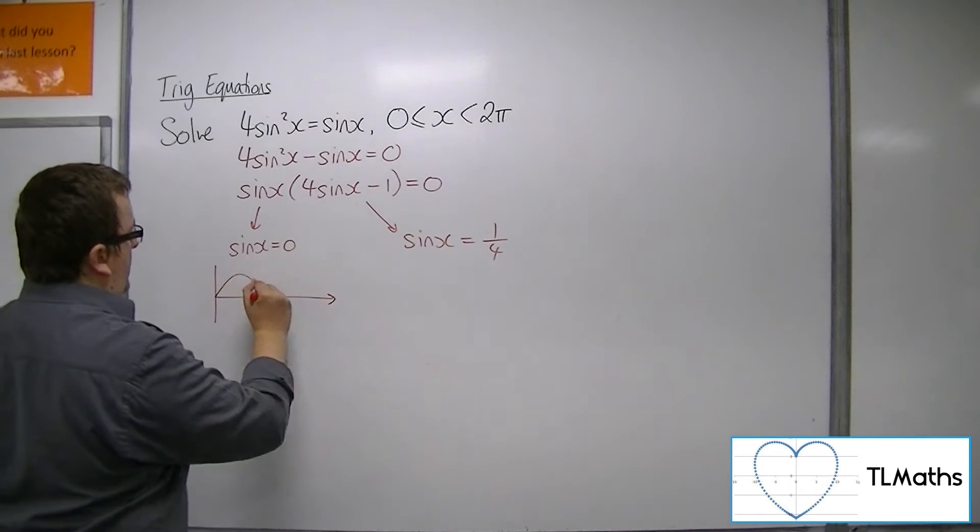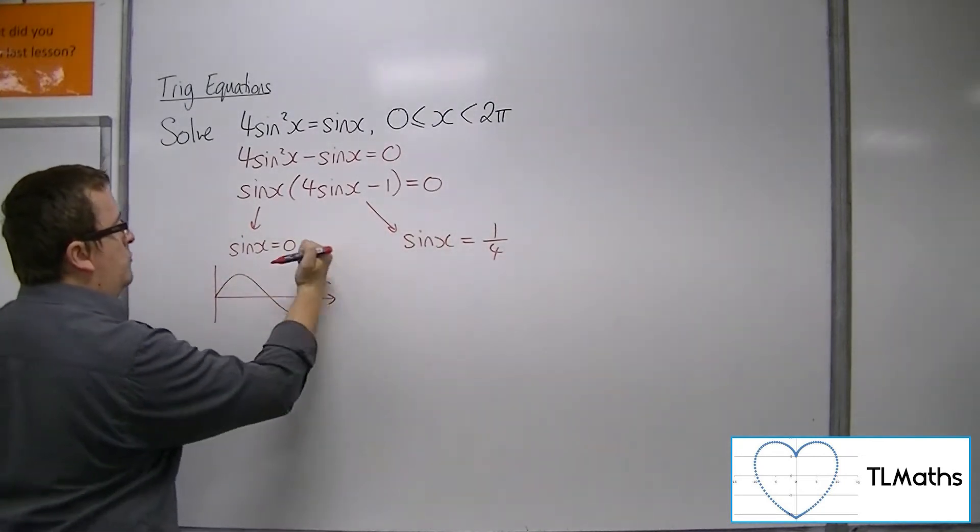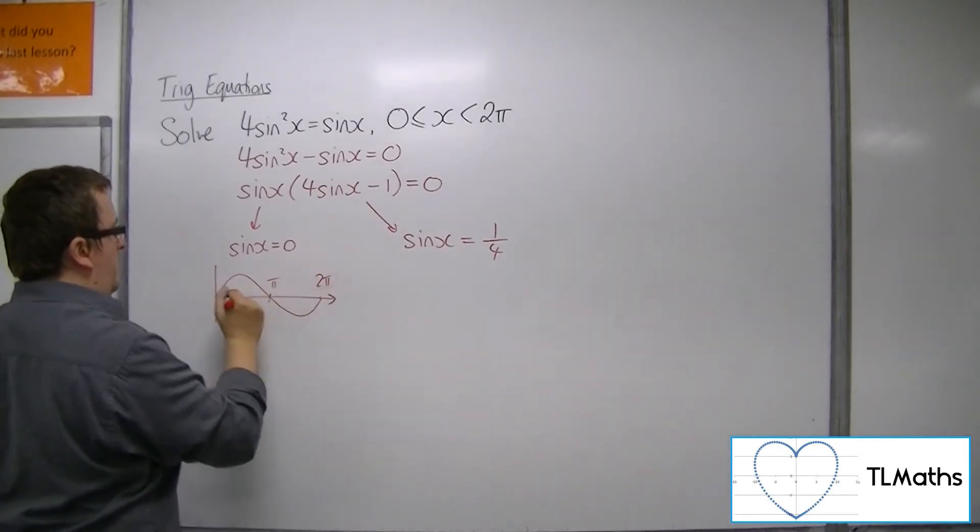Now sine x looks like this. We're in radians. So 2 pi, pi, 0.